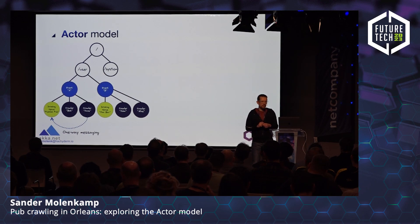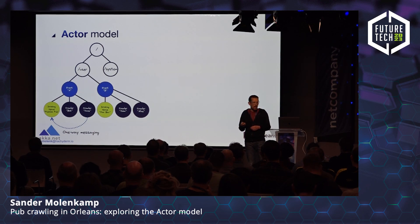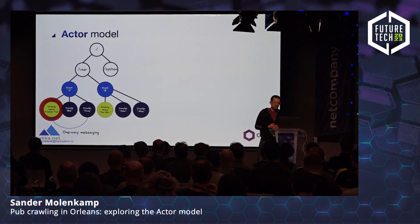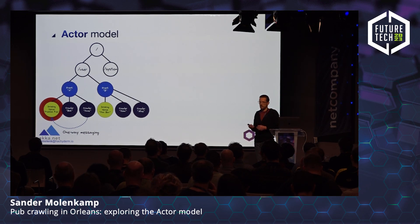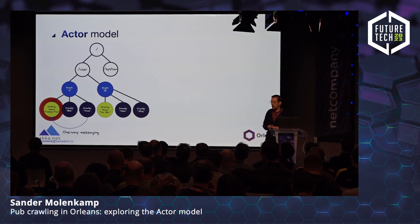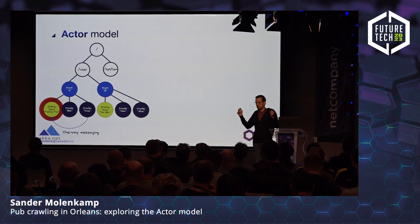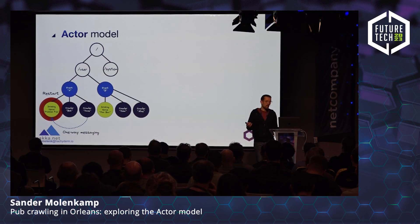Let's say a message arrives at the drinking venue actor but it fails to complete. The way Akka.NET works with errors is through supervision — it asks the parent actor what to do. The system asks Event A what should be done about that error. A can decide to just ignore it and move on, maybe restart that actor and try again, or if A doesn't know, it can escalate further up the tree.